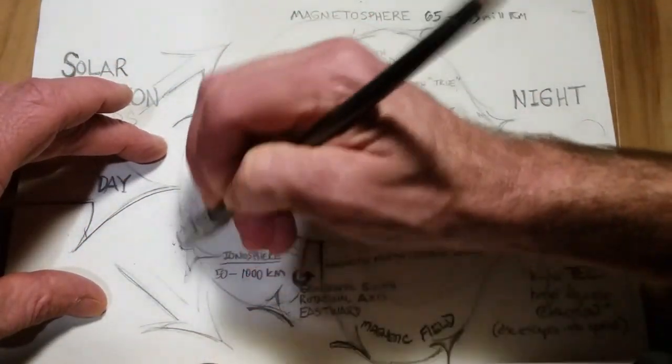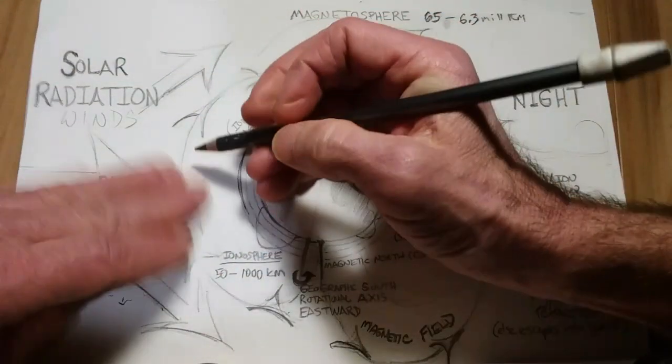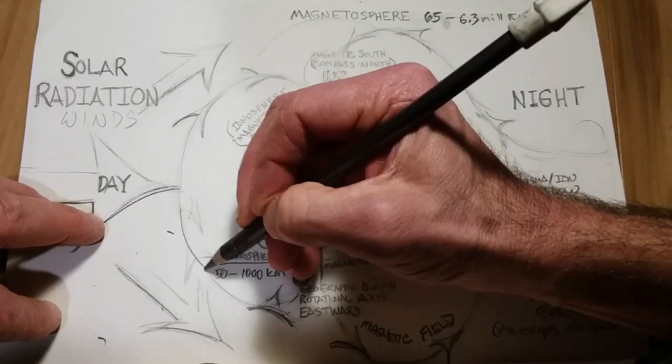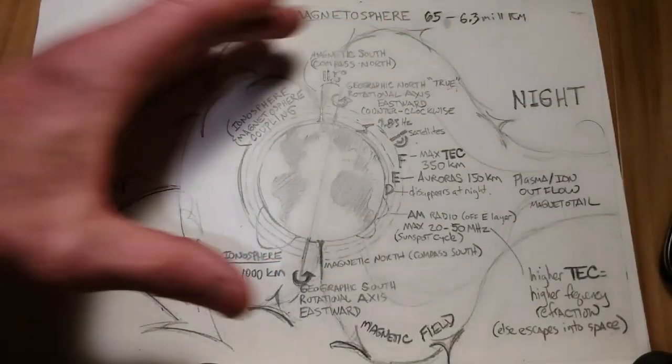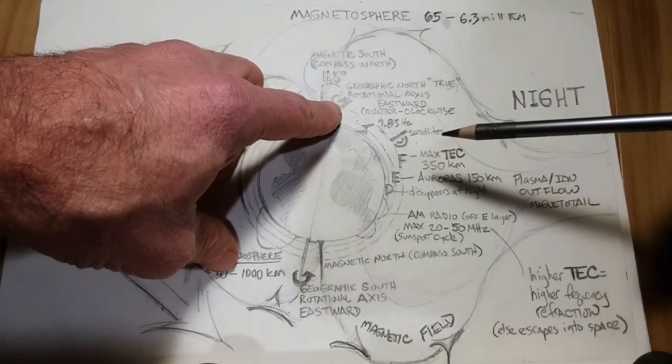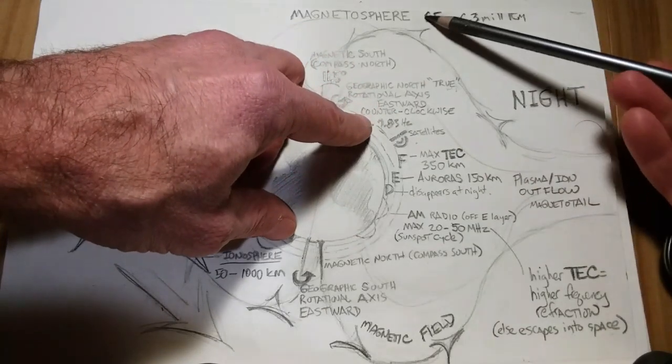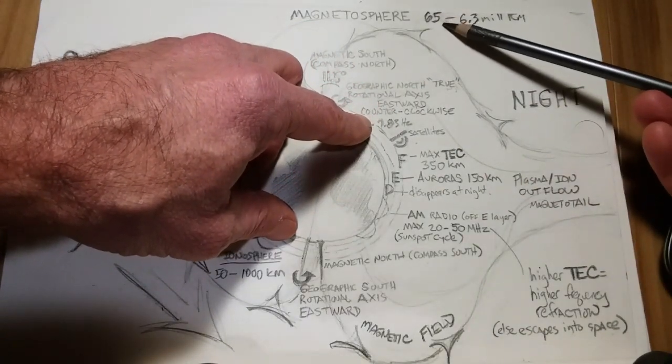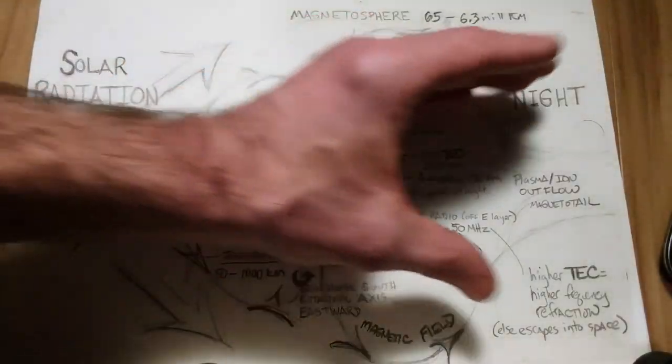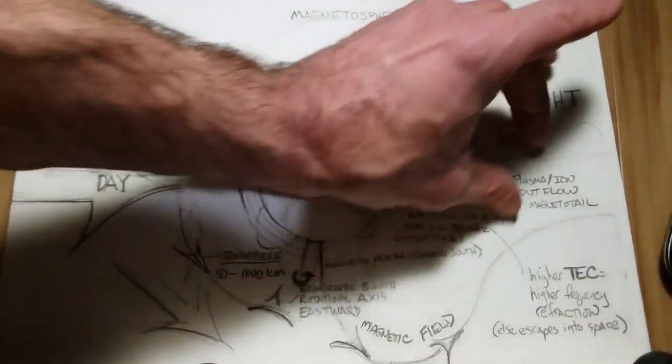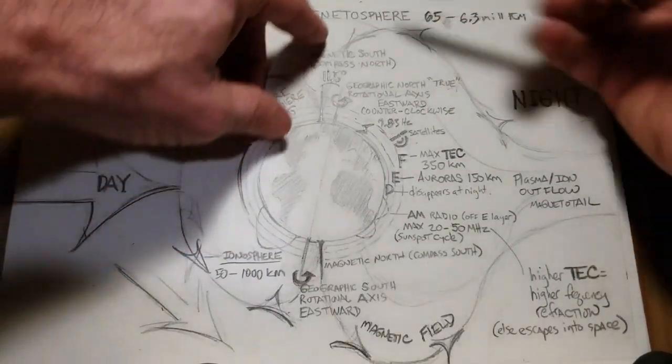these magnetic, or this magnetic field, as I understand it, actually gets pushed away in this direction because of that energy. Now, as we said, the ionosphere goes 50 to 1,000 kilometers above the Earth, whereas the magnetosphere goes 65 kilometers to 6.3 million. That's at the night side with that magnetotail, because it's not getting squashed back by the solar radiation.